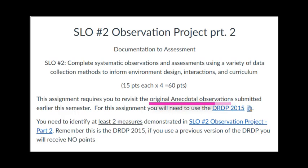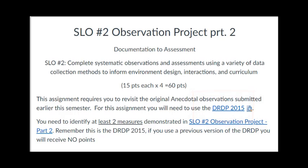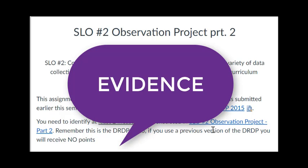We're going to revisit those original four anecdotal observations that you submitted a couple of weeks ago. You're going to need to also revisit the Desired Results Developmental Profile 2015. Now I know a lot of you are still familiar with the DRDP-R — I know I used it for years, you had all the measures memorized. But DRDP 2015 is here to stay; it's obviously been over three years now. So we're going to take pieces of our anecdotal observations and use them as evidence for at least two measures of the DRDP 2015.